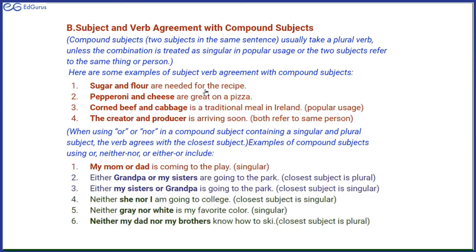You will understand better from examples. Sugar and flour are needed for the recipe. Sugar and flour are two different ingredients for a recipe, so we are adding flour to sugar — two subjects. So we use the verb 'are,' which is a plural verb, because the compound subjects are plural.